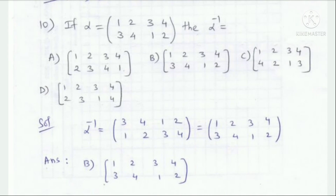If alpha equals a given permutation, then find alpha inverse. The 4 options for alpha inverse are provided, labeled 1, 2, 3, 4 — with values 15, 16, 18, 19.